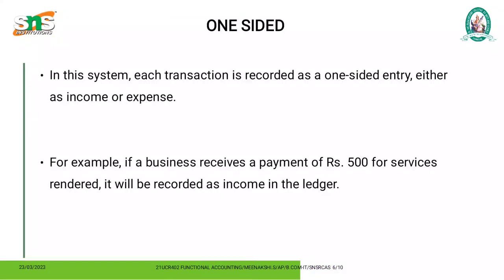The third feature is one sided. One aspect will be considered in this single entry system. Each transaction is recorded as a one-sided entry, either income or expense. For example, if a business receives a payment of Rs. 500 for services rendered, it will be recorded as income in the ledger. So the dual aspect will not be considered.